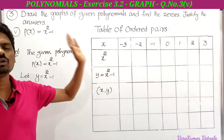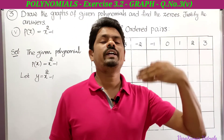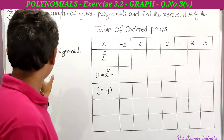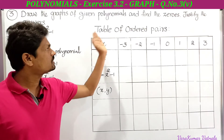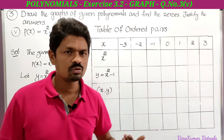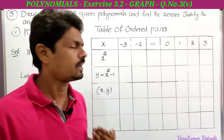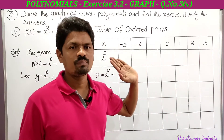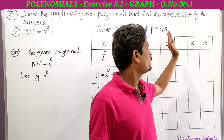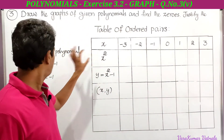The given polynomial is p(x) = x² − 1. To find the ordered pairs, let y = x² − 1. This is the table of ordered pairs — by taking x values we have to find the corresponding y values by substituting the x value into the equation y = x² − 1. I have taken x values: −3, −2, −1, 0, 1, 2, 3.